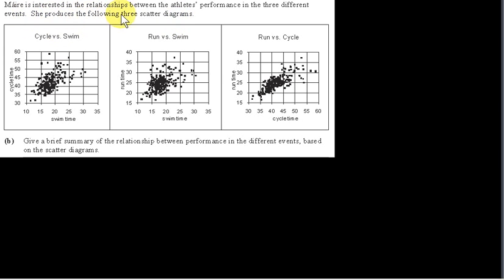Mara is interested in the relationships between the athletes' performance in the three different events. She produces three scatter diagrams. For cycle versus swim, there is a rough positive correlation — as swim times increase, cycle times increase in general. That's the trend. We only deal with linear correlation.